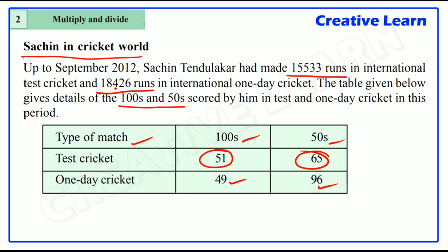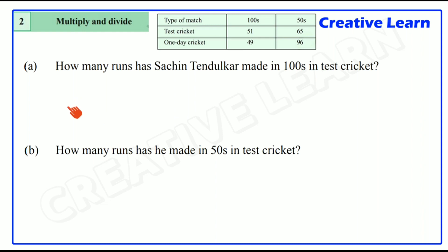Now let's see some problems based on this table. Here is the first one: How many runs has Sachin Tendulkar made in centuries in test cricket? In test cricket, he made 51 centuries.